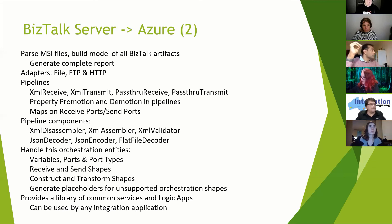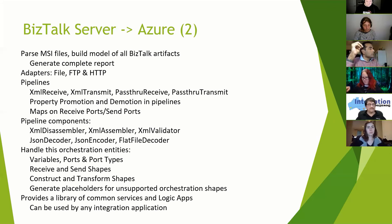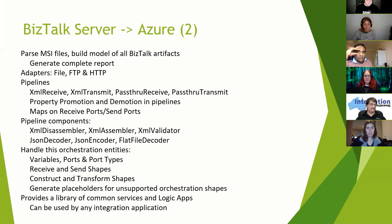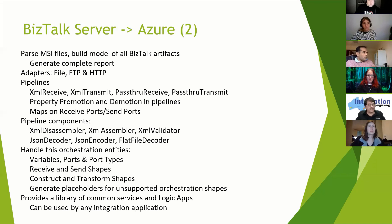The toolkit parses MSI files and builds a model of all artifacts, also generating a complete report. Currently it supports file, FTP, and HTTP adapters, and the following pipelines: XML receive, XML transmit, and pass-through. It handles property promotion and demotion, mapping on send and receive ports, and pipeline components around XML, JSON, and the flat file decoder — which is one of the best flat file decoders I've encountered. It also handles orchestrations, variables, port types, receive/send shapes, and construct and transform shapes, leaving placeholders for anything it can't handle.